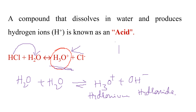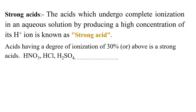Due to the increased hydronium ions, it becomes more acidic in nature. So a substance or compound that dissolves in water and produces hydrogen ions, or hydronium H3O+ ions, is known as an acid.